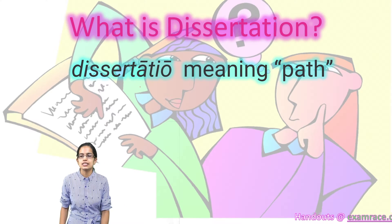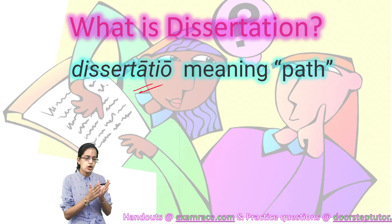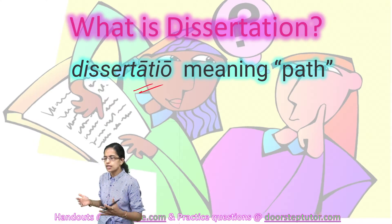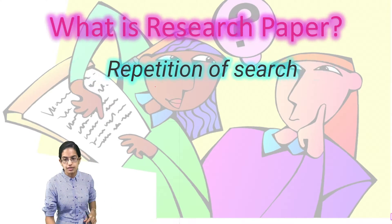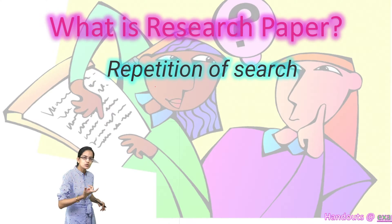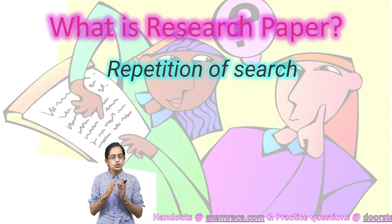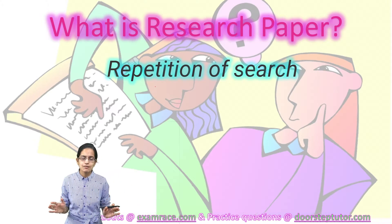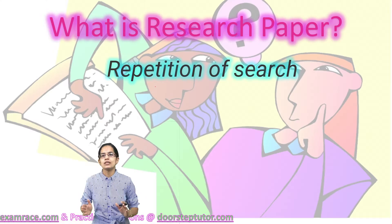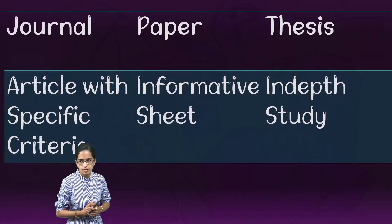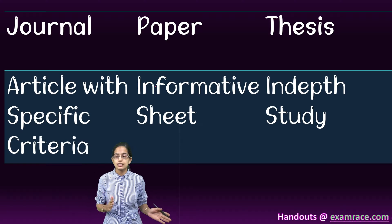The next is dissertation. Dissertation comes from the word 'desertion' which means the path. So it gives you a path to obtain specifically your degree or diploma program, and this is a long piece of essay which is commonly written. When it comes to a research paper, it is simply re plus search — that is, repetition of search. It should be original, plagiarism-free, and has to be either qualitative or quantitative in nature. So research papers are important.